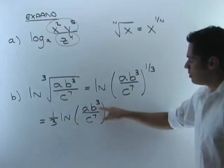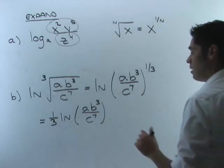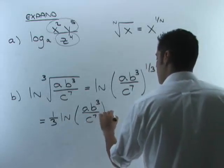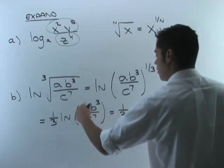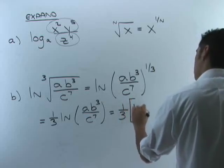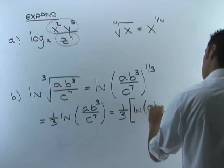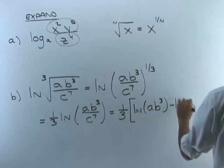Now, we know that the division, we can split it up into two logs and create subtraction. But be careful with that one-third that's out front. That one-third has to hit whatever this becomes. So I'm going to put a bracket here, and I'm going to say this is natural log of the numerator, ab cubed, then subtraction, natural log of the denominator, c to the seventh.